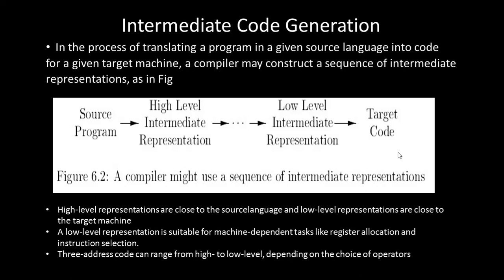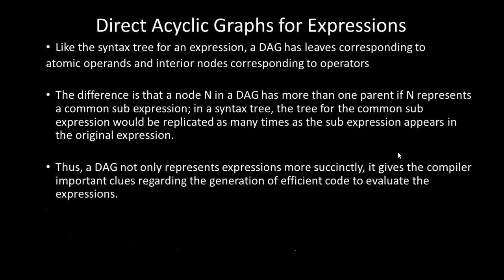Three-address code ranges from high to low level depending on the choice of operators. Before discussing three-address code, we need to discuss DAG — Directed Acyclic Graph. A graph consists of nodes as well as edges. Like the syntax tree for an expression, a DAG has leaves corresponding to atomic operands and interior nodes corresponding to operators. The difference between a syntax tree and a DAG is that in a DAG, nodes can have more than one parent for each common sub-expression, which is not normally possible in a syntax tree.